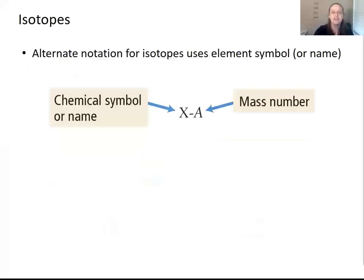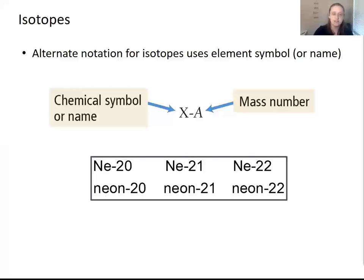Isotopes can also be indicated using an alternate notation, which just gives the chemical symbol and the mass number. So again, the mass number is the sum of the protons and the neutrons, and in order to determine the number of neutrons, you would need to subtract the number of protons from that mass number.